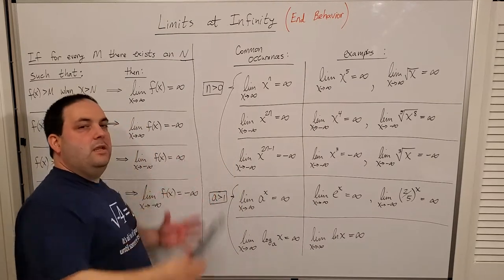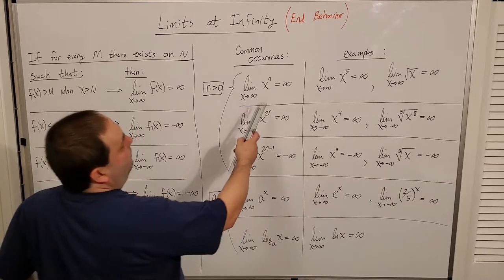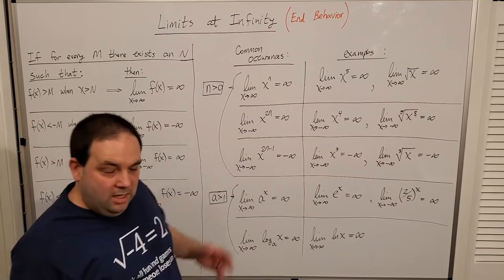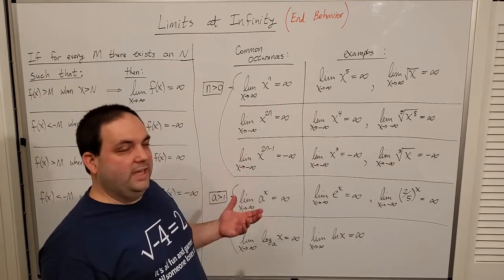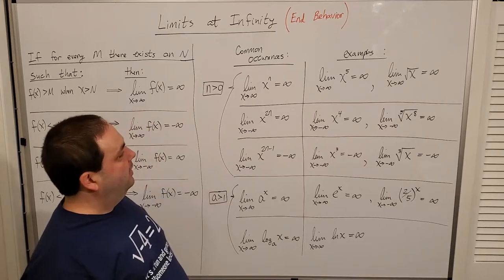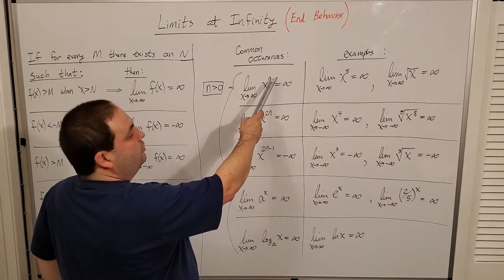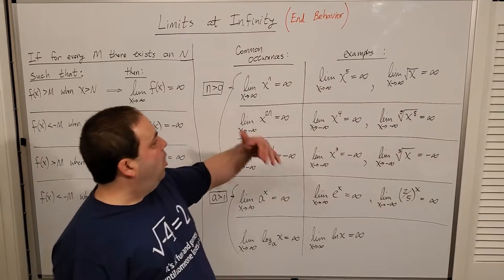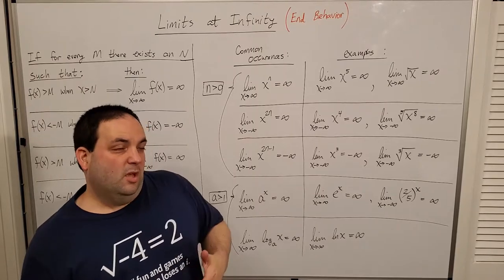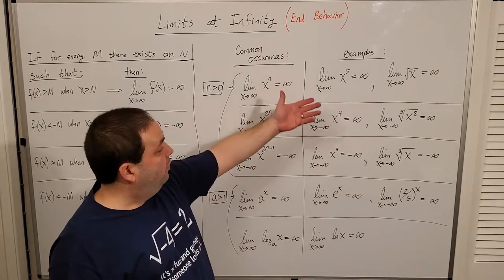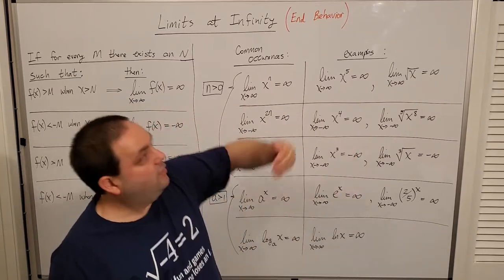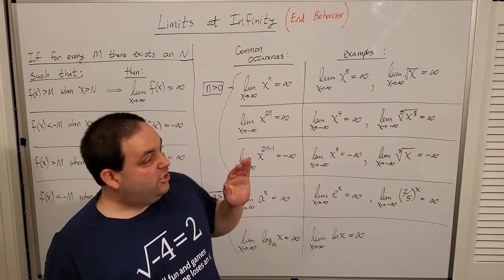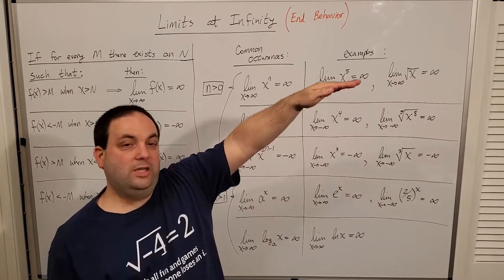If you pick n to be any positive value, here's what happens with these functions. If I take the limit as x goes to infinity of x to some power n, and n is something positive — one, two, three, one-half, three-fifths, any of those — then infinity is going to be the answer to the limit because all of those functions increase without bound. Some slow, some pretty fast. For example, x to the fifth: if I let x go out to infinity, the function takes off to infinity. Or square root of x: if I let x go out to infinity, square root of x slowly increases to infinity.